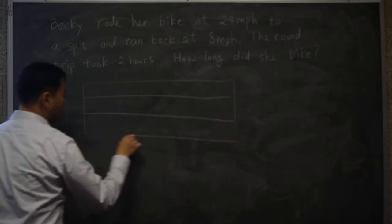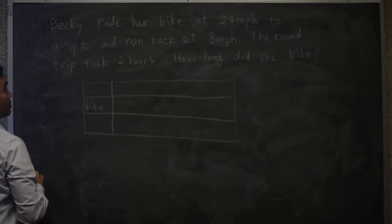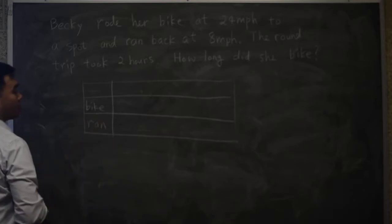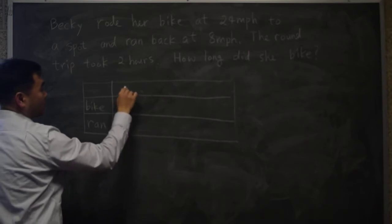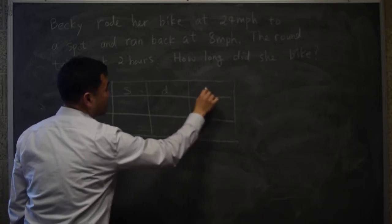One stage Becky was riding a bike and she was also running, so that's the other one. Then, for each of the stages, you should put speed, distance, and time.